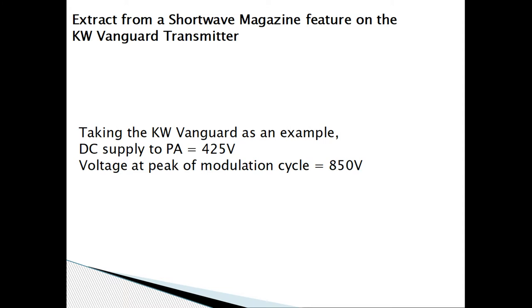Just an example — when I got the KW Vanguard I was reading articles in Shortwave Magazine to understand what people had done since it was designed in the 1960s. This extract says: taking the KW Vanguard as an example, the DC supply to the PA is 425 volts; the voltage at the peak of the modulation cycle will be 850 volts. That's not me speaking — that's Shortwave Magazine.